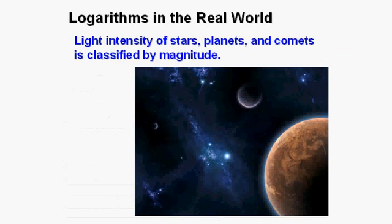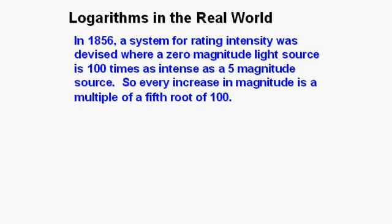The light intensity of stars, planets, and comets is classified by magnitude. In 1856, a system for rating intensity was devised where a zero magnitude light source is 100 times as intense as a five magnitude source.